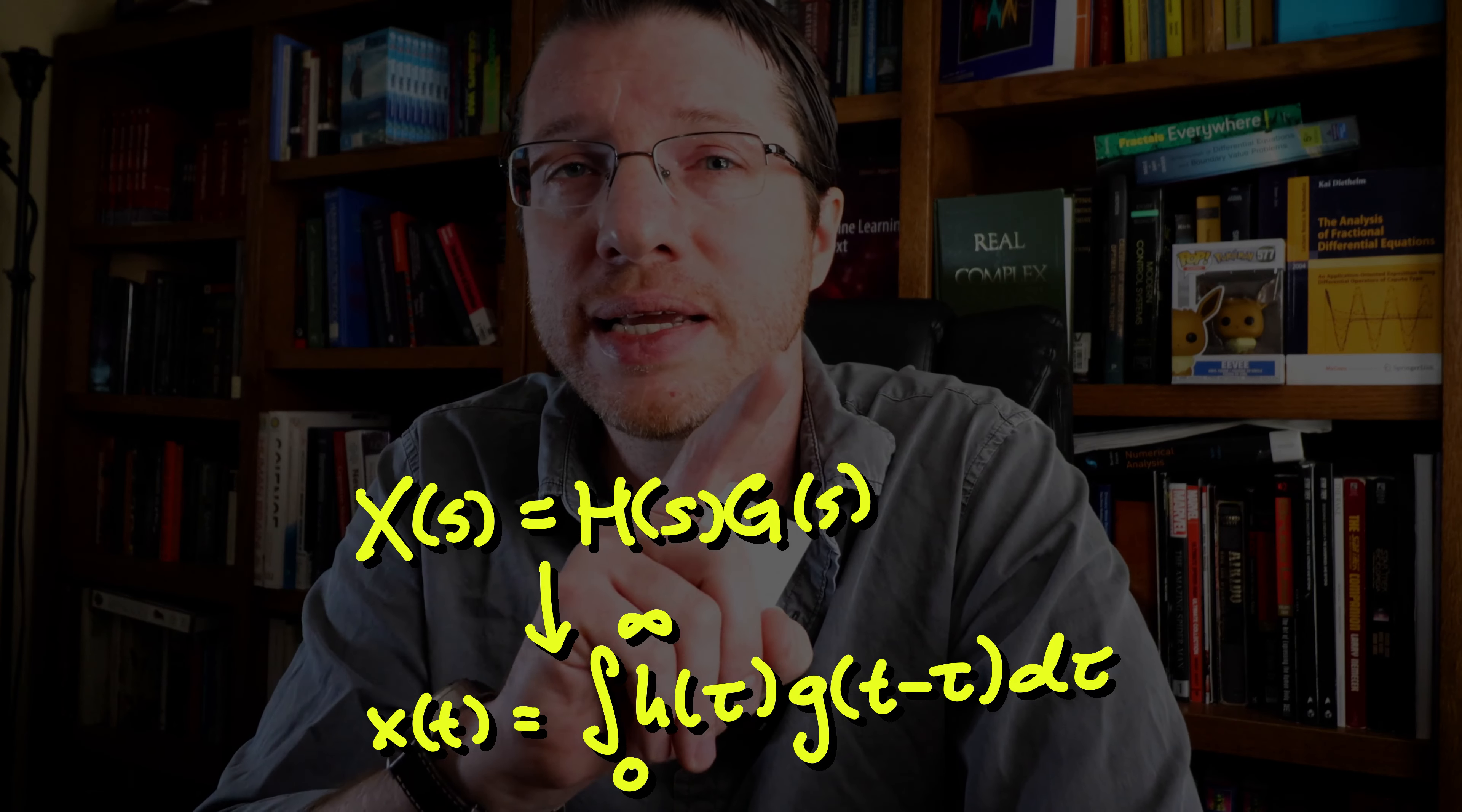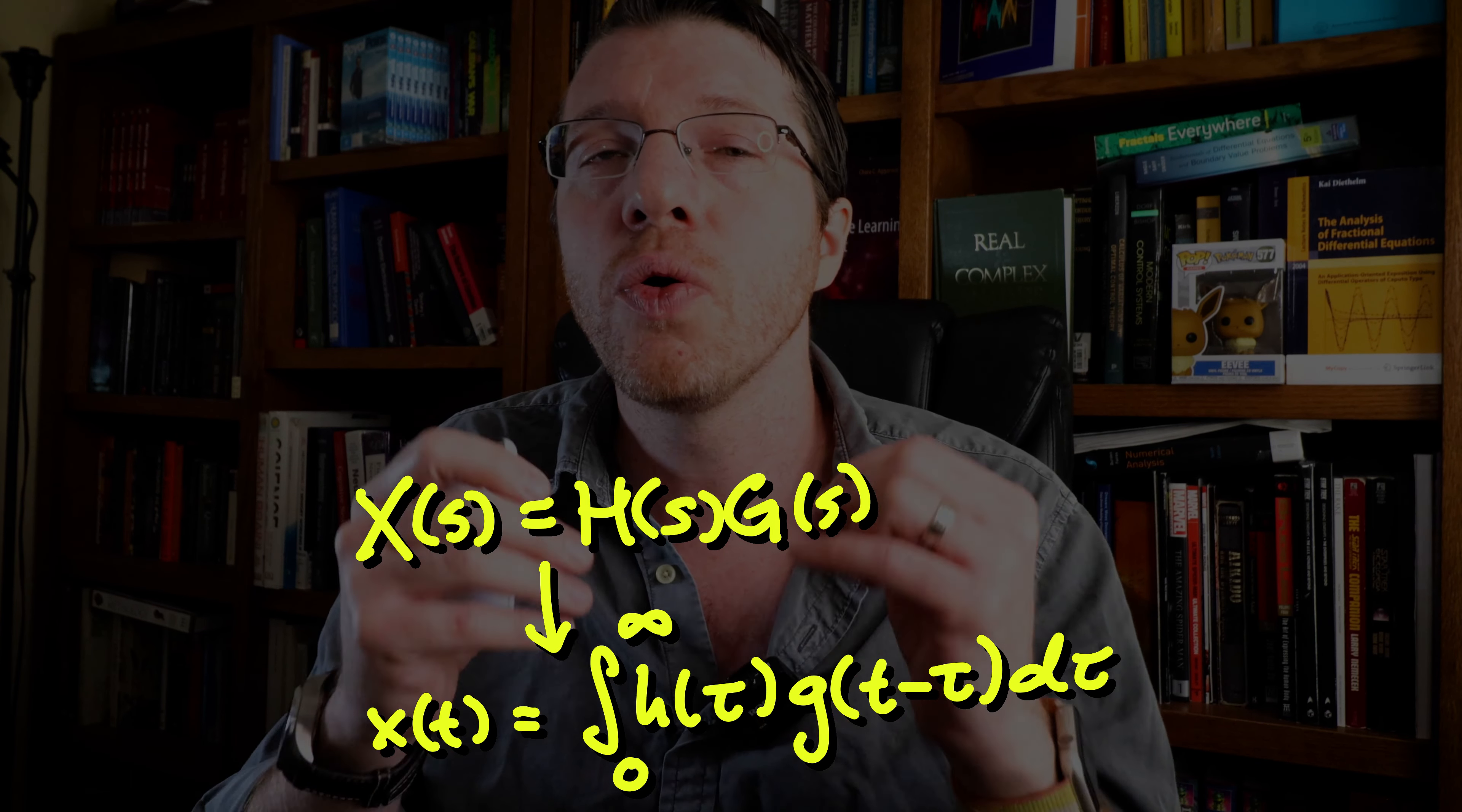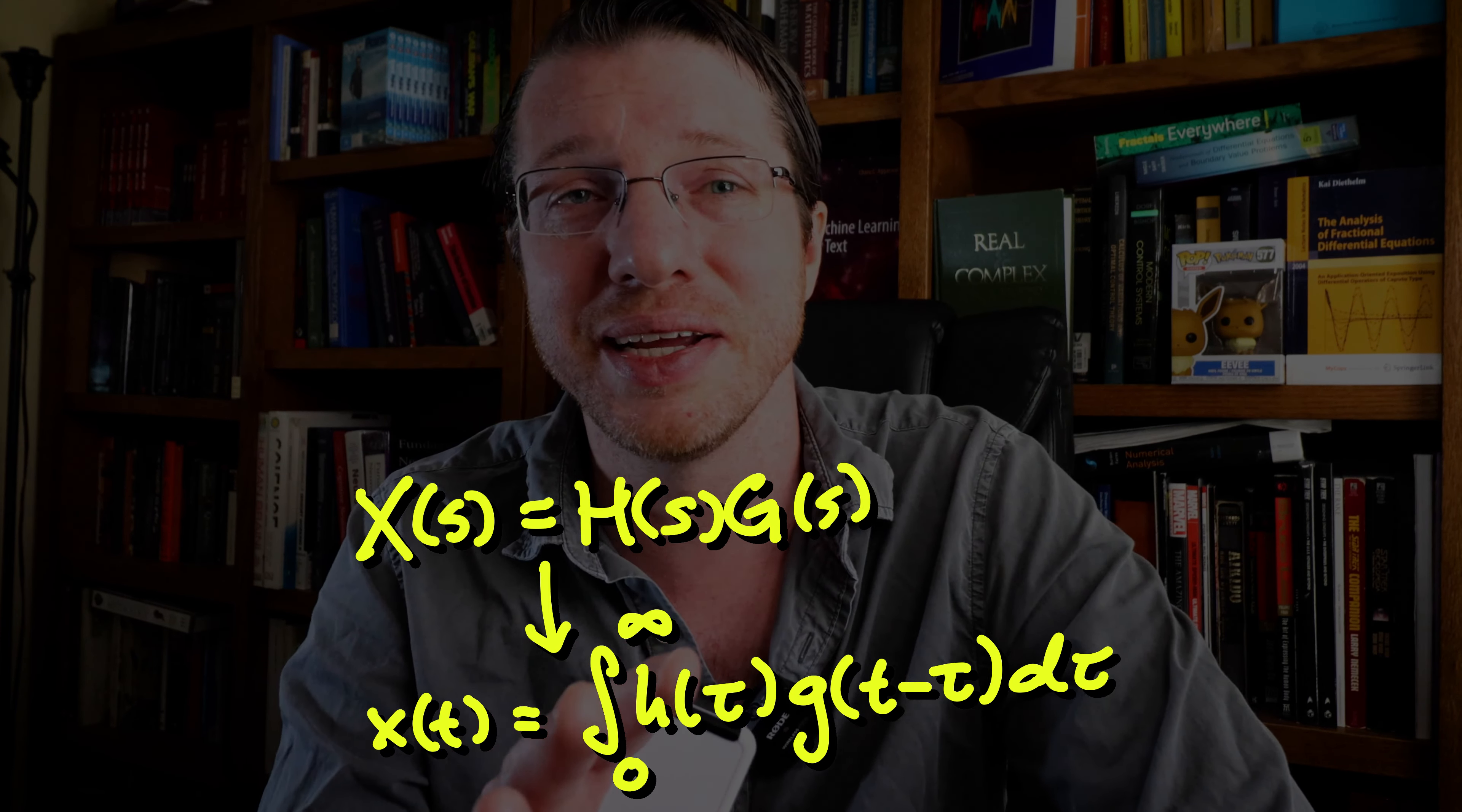This is because we can take a product of Laplace transforms and invert them in the time domain with the convolution. Now the hard part is actually coming up with the coherent definition of Laplace transform of a delta function. If you want to see how deep that rabbit hole goes, you can check out this video here.